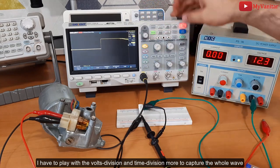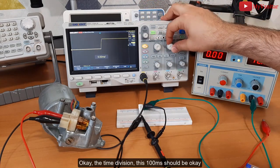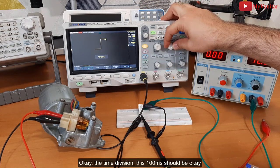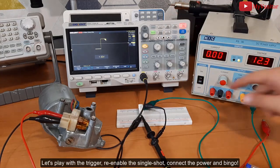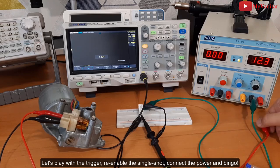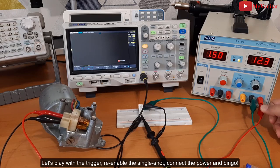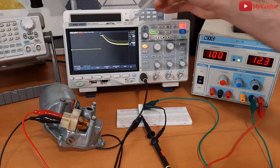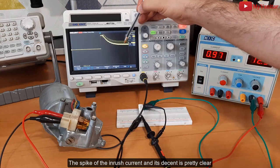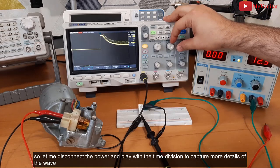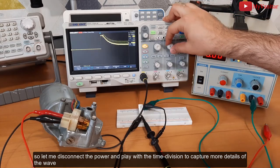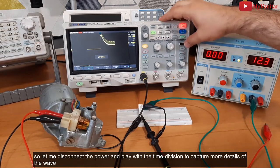to capture the whole wave. Okay, the time division - this 100 millisecond should be okay. Let's play with the trigger. We enable the single shot, connect the power, and bingo! The spike of the inrush current and its descent is pretty clear. So let me disconnect the power and play with the time division to capture more details of